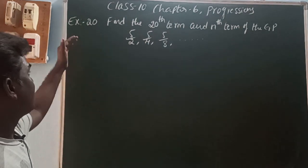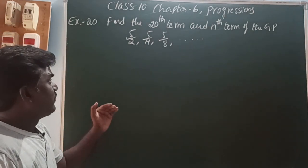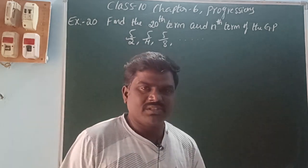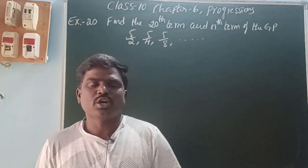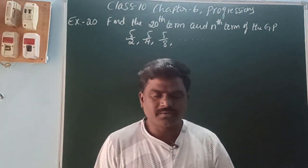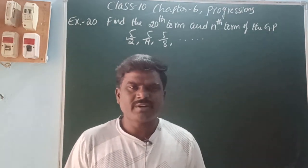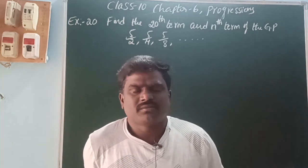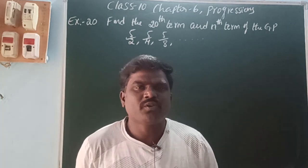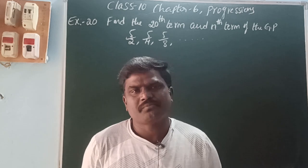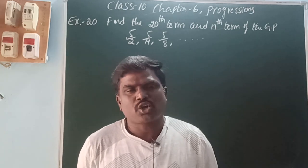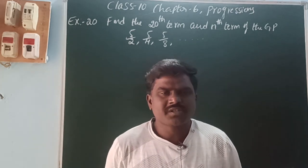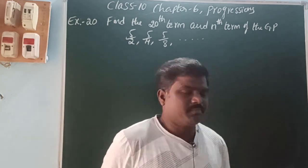So, what is called geometric progression? In a geometric progression, the ratio of any two terms is the same. The common ratio is the same. That progression is called geometric progression.